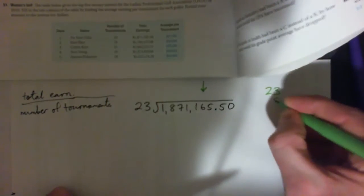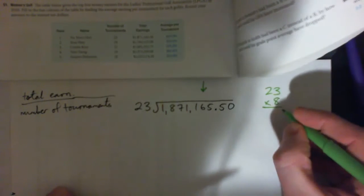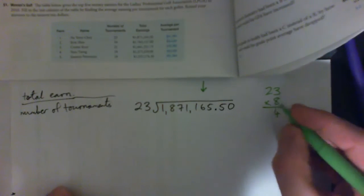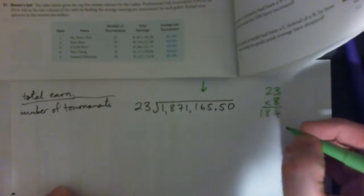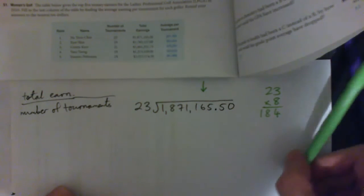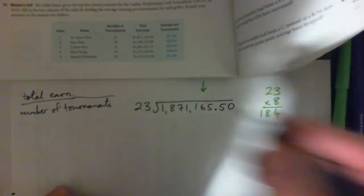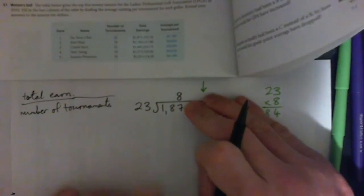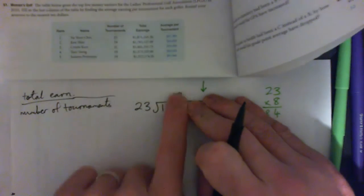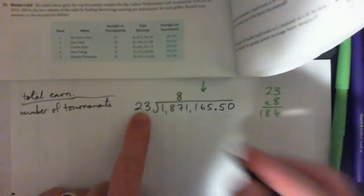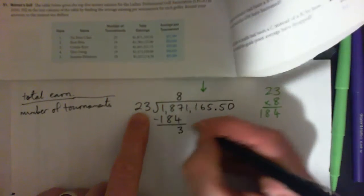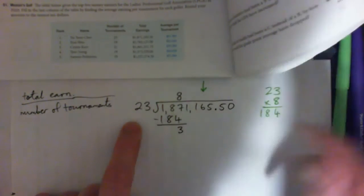So I'll do it over here. 23 times 8, 3 eighths. 8 times 3 is 24 carry 2. 2 eighths is 16 and 2 is 18. 184. That looks about right. So I'm going to guess eight. So it's 23 into 187 goes eight times. Eight goes over the seven there. Eight times 23 we found was 184. Subtract and we get three. Three is less than 23 so that was a good job.